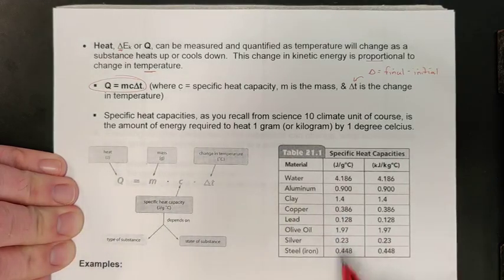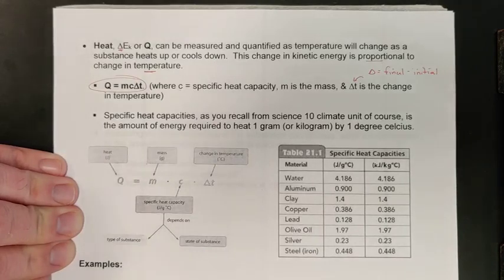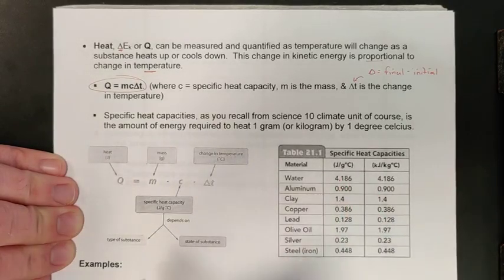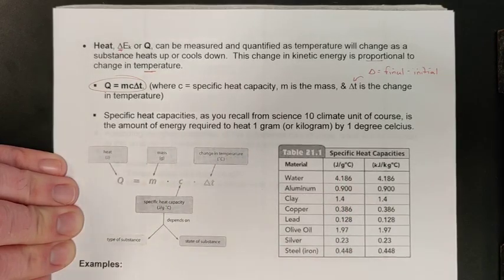This is why your cookware and things like that—your steel—will heat up very fast. But the water that is in the pot seems to take forever to boil because it takes so much more energy to heat up one gram of water by a degree C versus one gram of silver by a degree C.